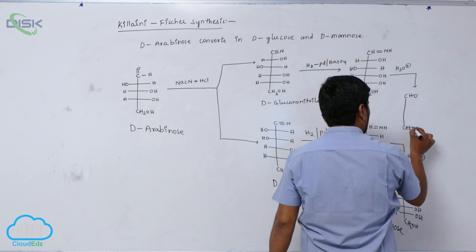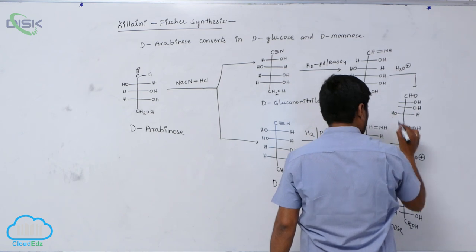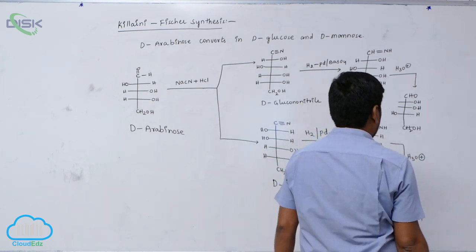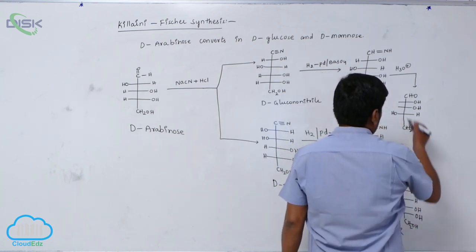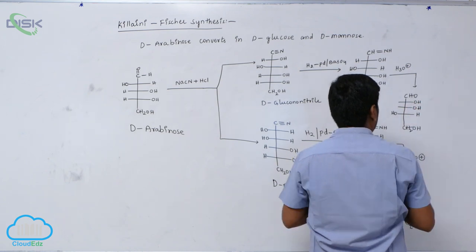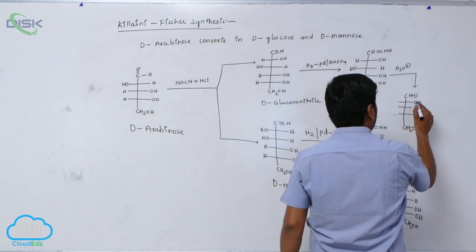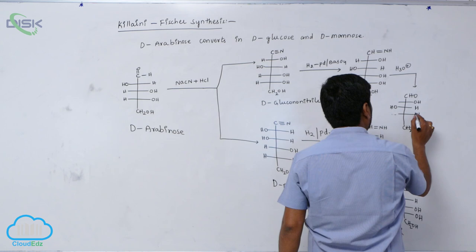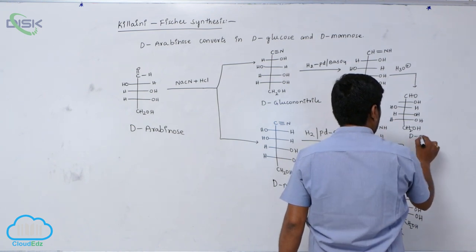CH2OH, OH, H OH, H OH, OH hydrogen, OH. So this is known as D-Glucose.